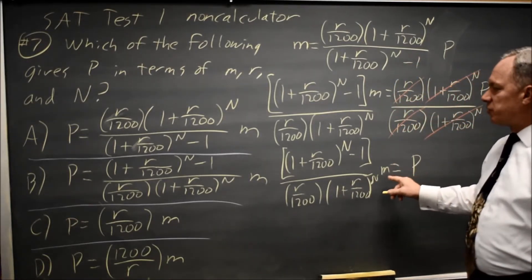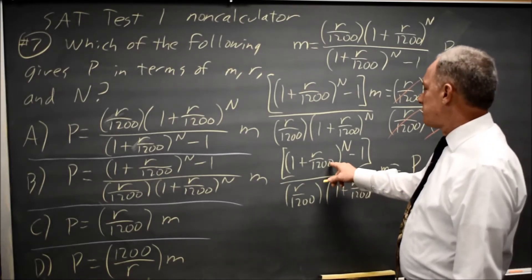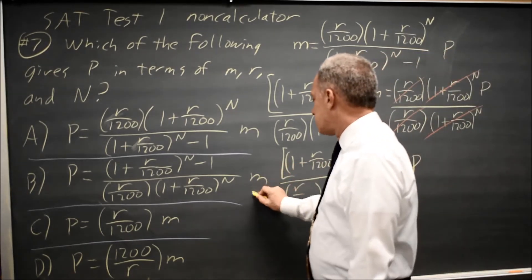Comparing this with my first two answer choices, because I already ruled out C and D, my numerator is supposed to be 1 plus R over 1200 to the N minus 1, so that is choice B.